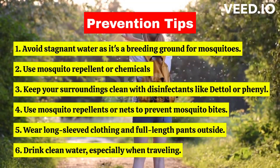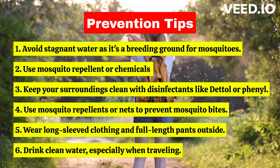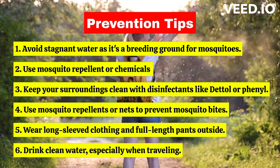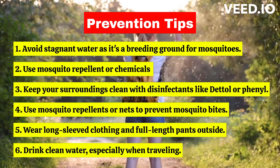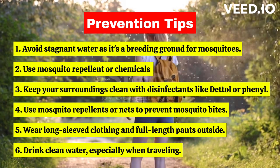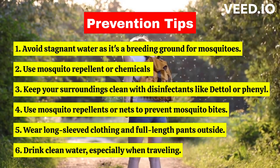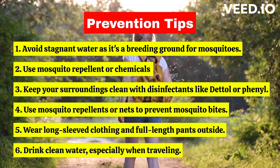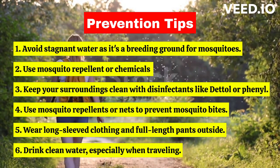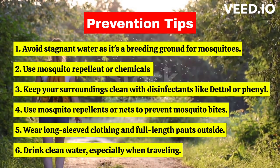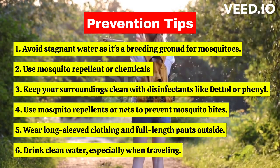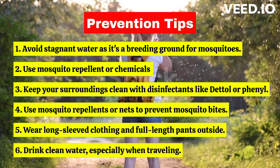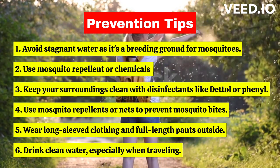Prevention tips: do not allow water to stagnate, as this serves as the breeding ground for Anopheles mosquitoes. Water bodies should be sprayed with mosquito repellent or other effective chemicals to keep the mosquito population under control. Keep your surroundings clean by keeping your home clean, dry, and hygienic. Use disinfectants like Dettol, Phenyl, etc., for cleaning your house and toilets.